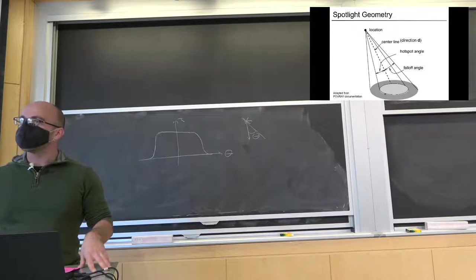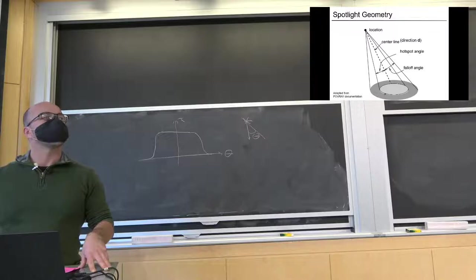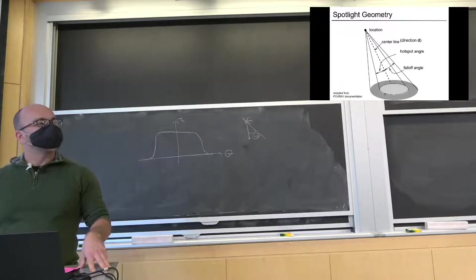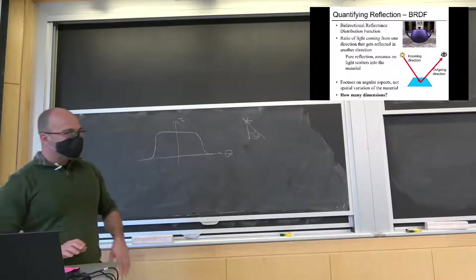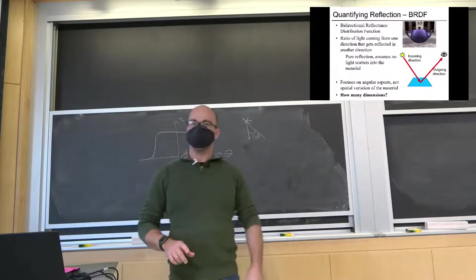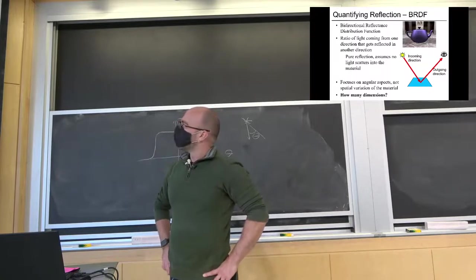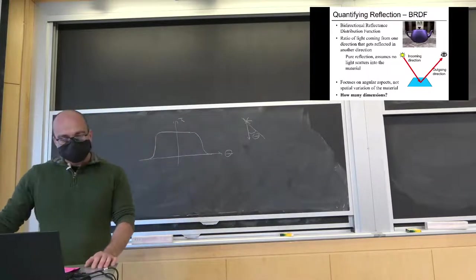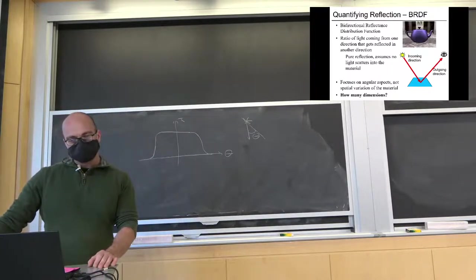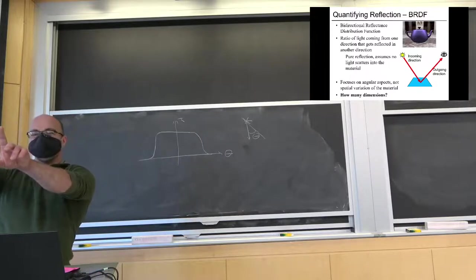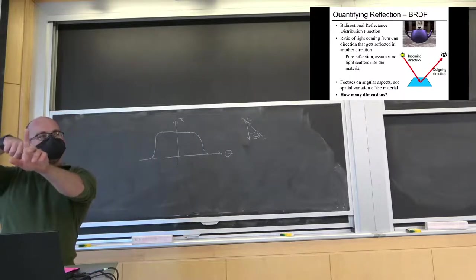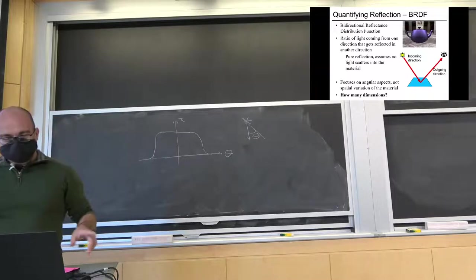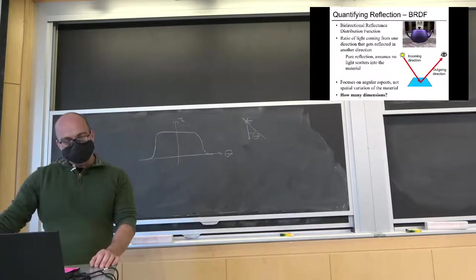Does anybody know what BRDF stands for? It's a bidirectional reflectance distribution function. Essentially, the BRDF is like a ratio — a function of an incoming direction and an outgoing direction — saying how much of light coming in this way goes out that way.